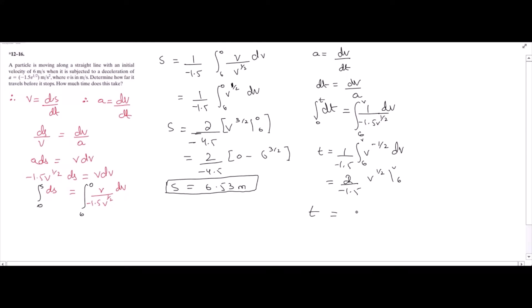Then we have t is equal to 2 over negative 1.5, we have v to the 1 over 2, and the limits are [0 minus 6 to the 1 over 2]. The final velocity is 0 because it has to stop, so v equals 0.